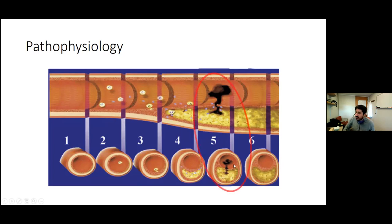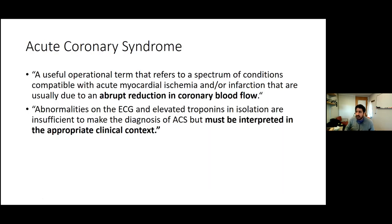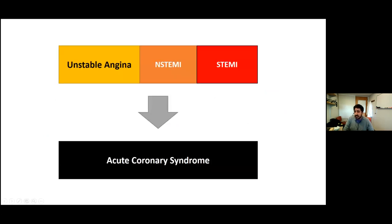What is an acute coronary syndrome? It's a useful operational term referring to a spectrum of conditions — any set of symptoms and signs due to, or appearing to be due to, an abrupt reduction in coronary blood flow. It's purposely vague. From the ACC/AHA guidelines: abnormalities on ECG and elevated troponin in isolation don't make a diagnosis of ACS. ACS is a story — a story that says, I'm worried there's an abrupt cessation in coronary blood flow resulting in a set of symptoms I've learned is consistent with that.